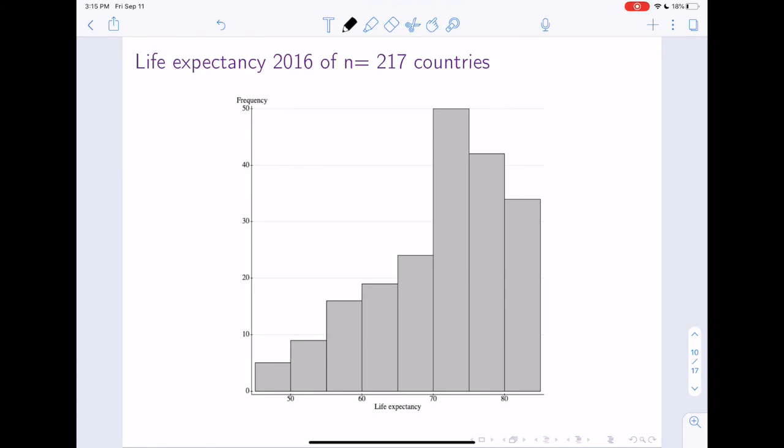So this is another plot. This plot is of the life expectancy of the countries. I think of all countries, all 217 countries as of 2016. So how would you describe the shape of this distribution?